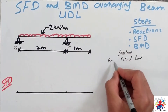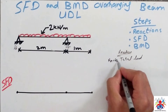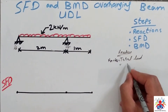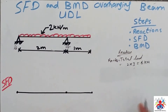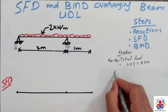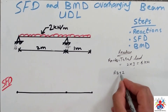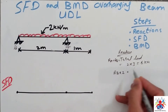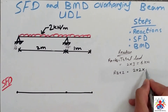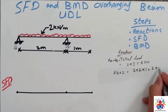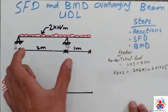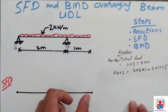Total load: RA plus RB is equal to total load. We have a three-meter beam with 2 kN/m UDL, so 2 multiplied by 3 is equal to 6 kilonewtons. Now we have RB multiplied by 2 equals 2 multiplied by 2 multiplied by 1, plus 2 multiplied by 1 multiplied by 2.5.